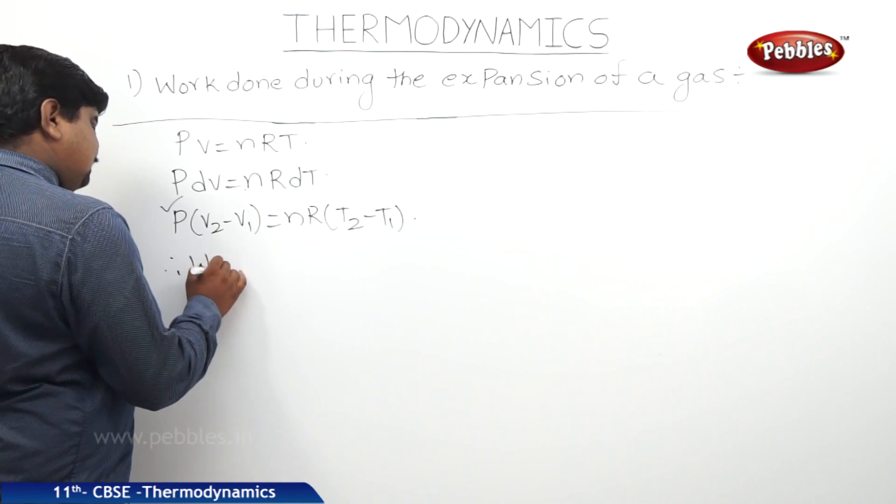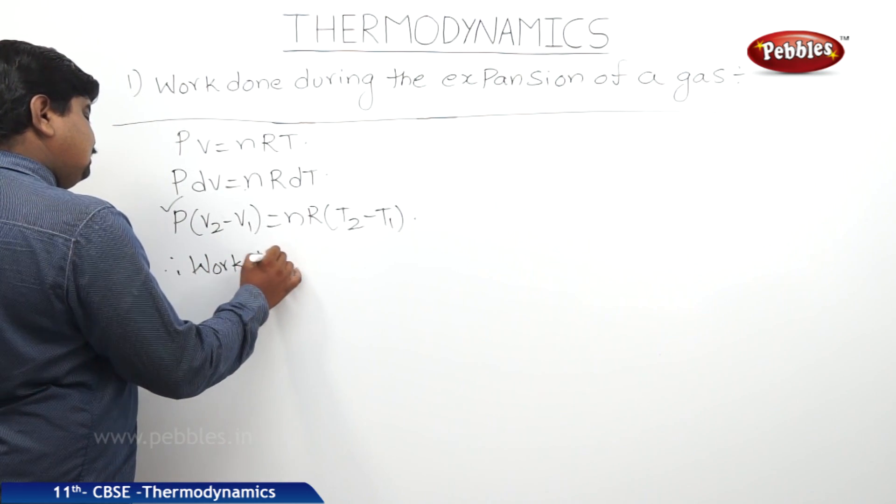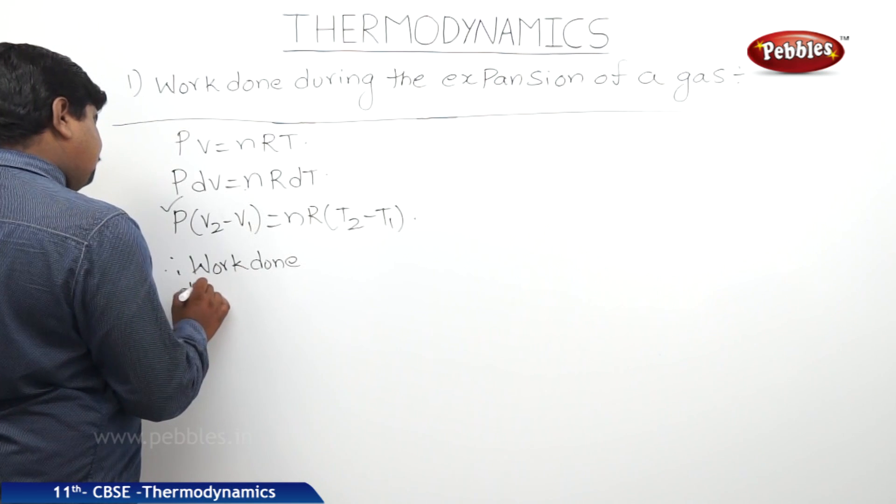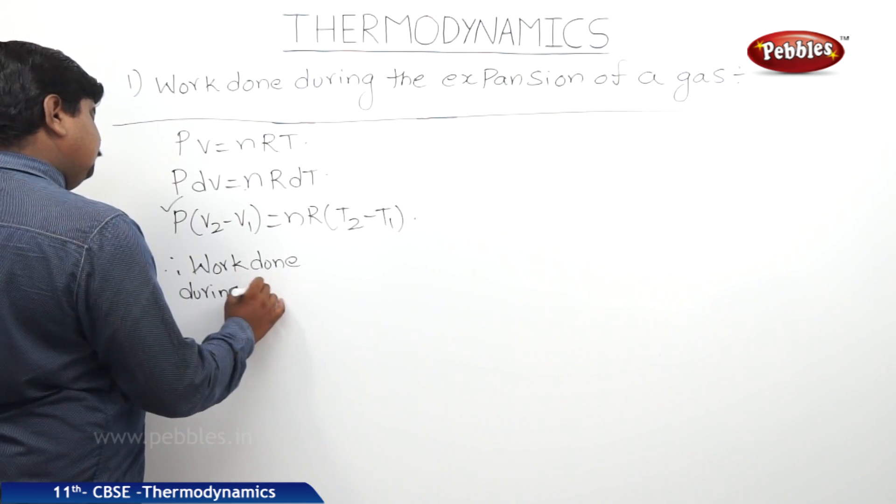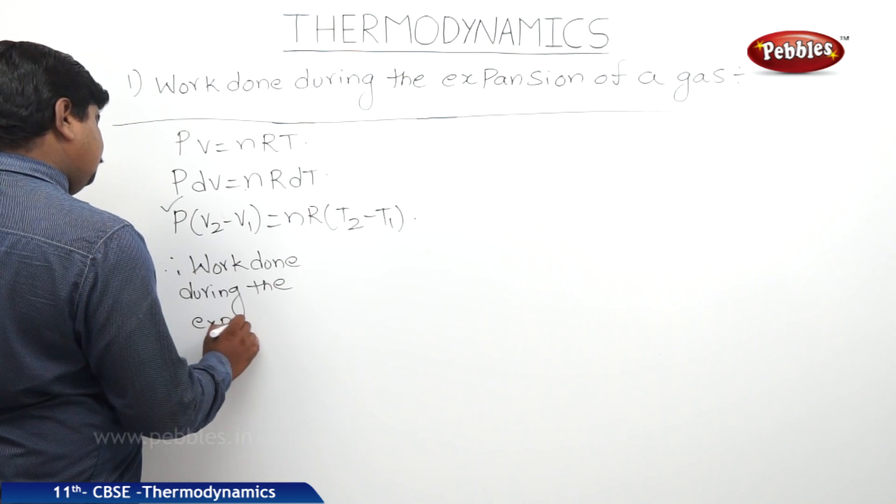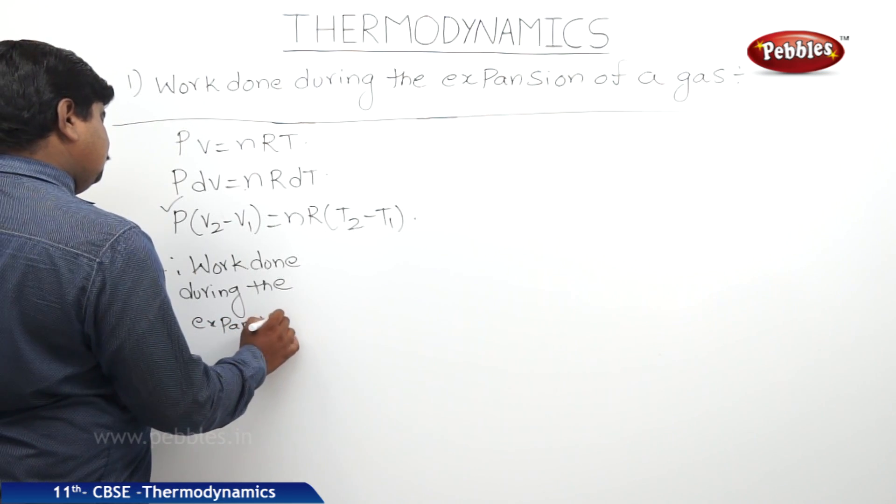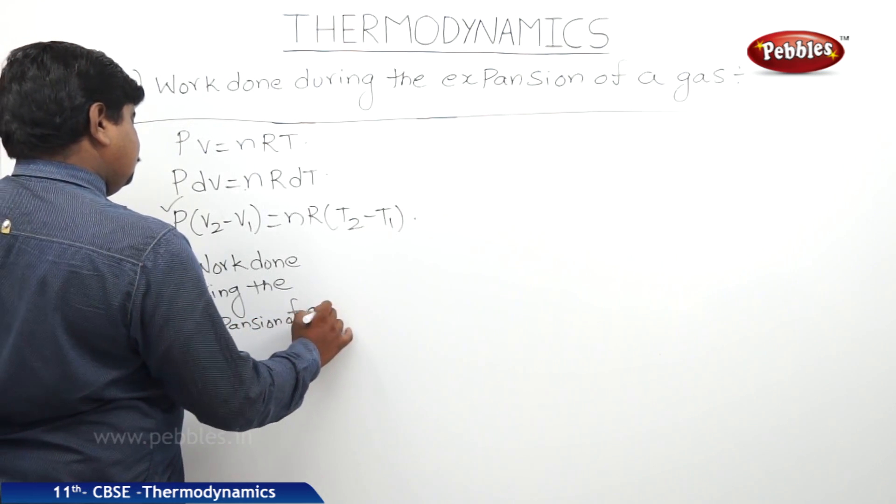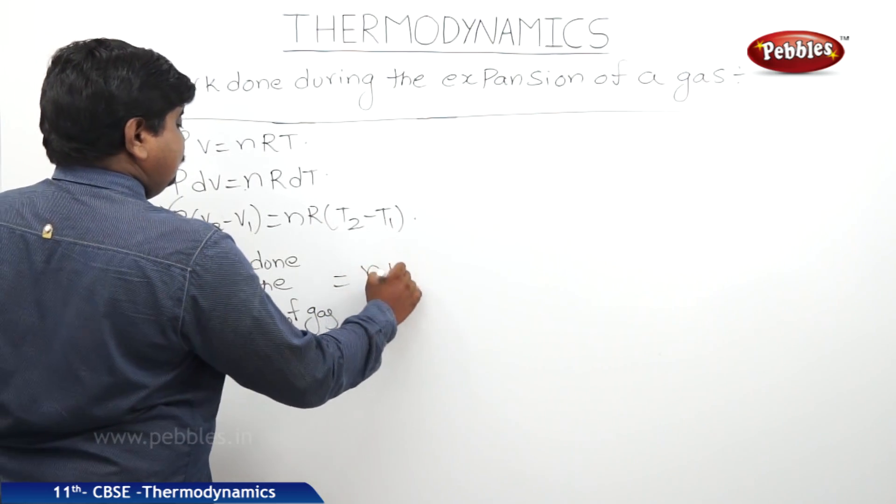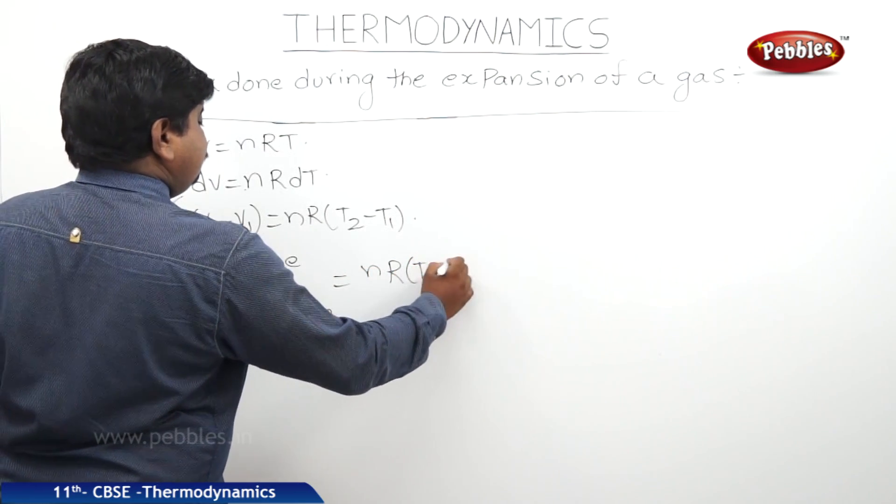Therefore, work done during the expansion of gas equals nR into T2 minus T1.